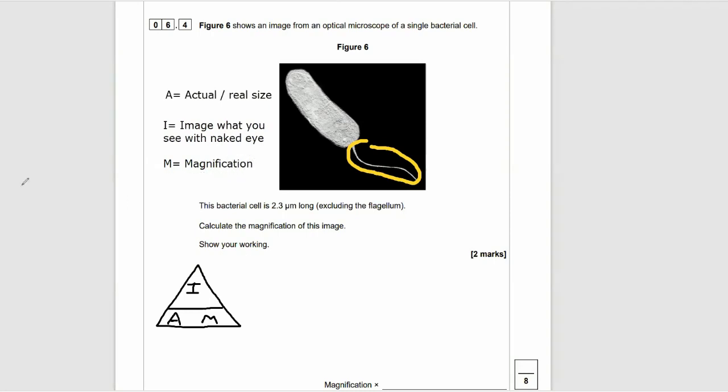So let's rearrange this equation to find M, because that's what they're asking us to find. So we want to find M, we've got to do I divided by A. So we do I over A equals M.